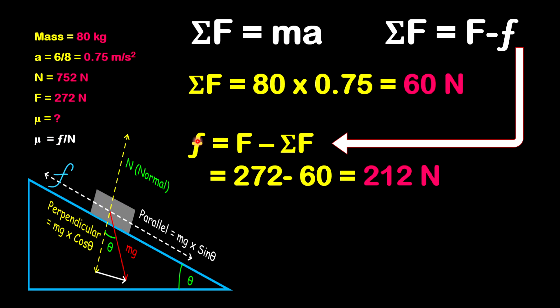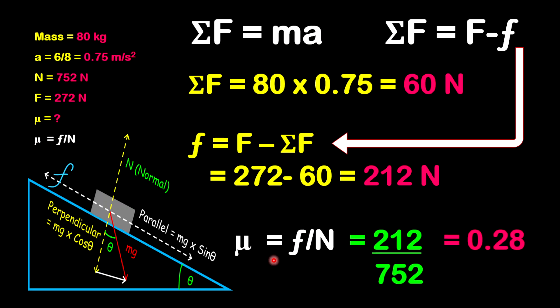We now have our frictional force and our normal force, so we can find the coefficient of friction. The coefficient of friction is frictional force divided by normal: 212 divided by 752 gives us 0.28. The coefficient of friction is dimensionless because it is the ratio between the frictional force and the normal, and it indicates how smooth or how rough the surface is.